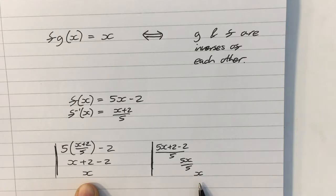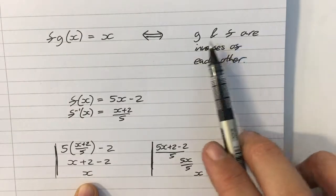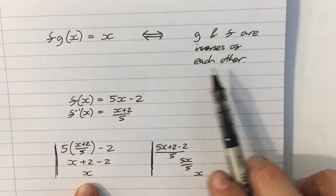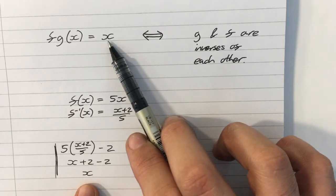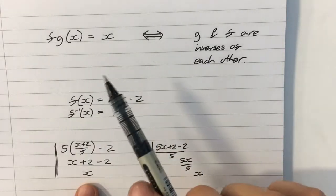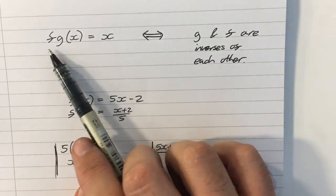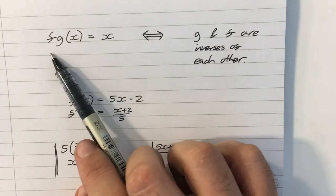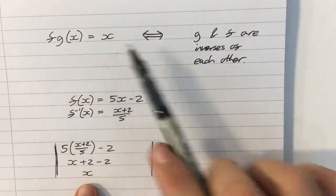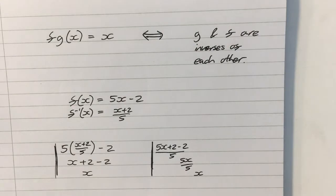And that is true all the time. If you have two functions that are inverses of each other, then if you composite those, they'll come out to be just x. But the converse is also true. If two functions composited together gives you just x, then they are inverses.